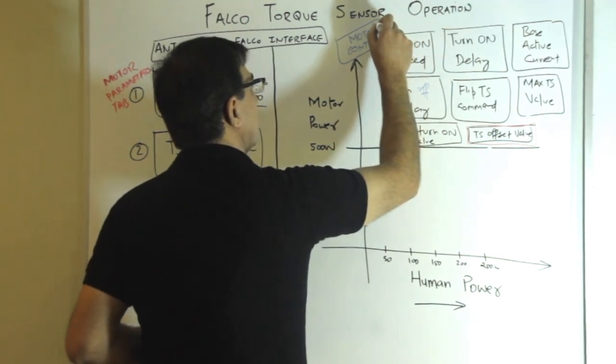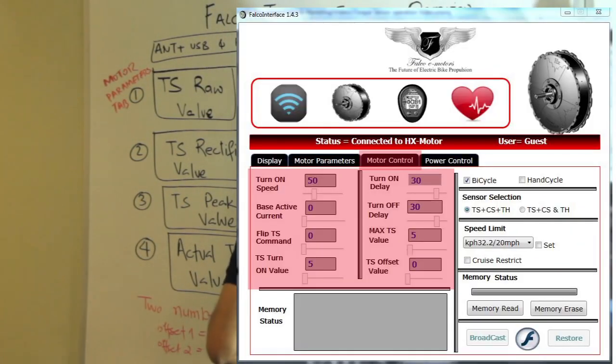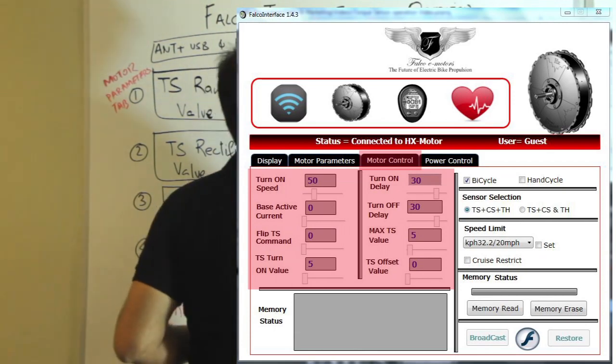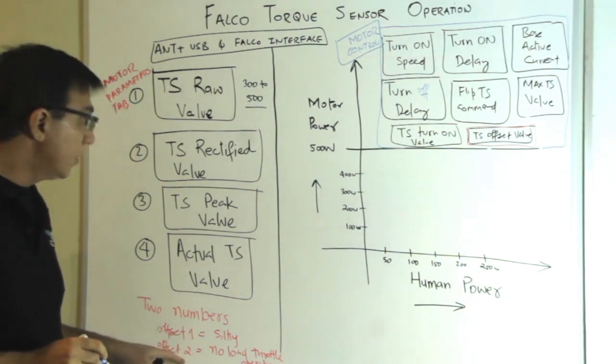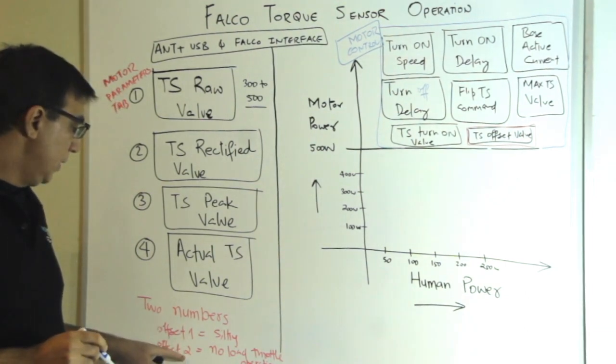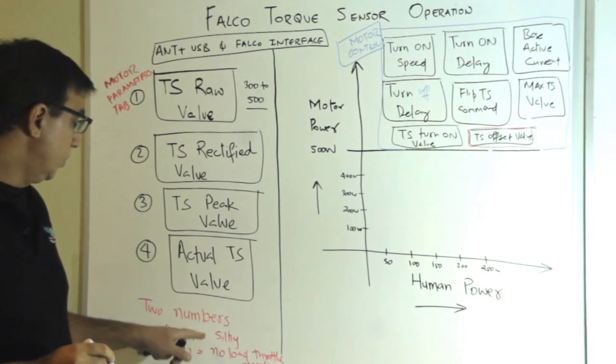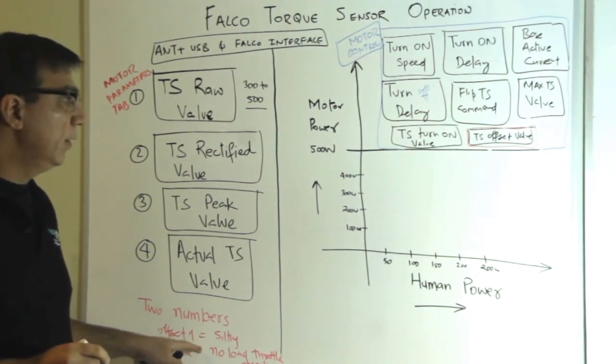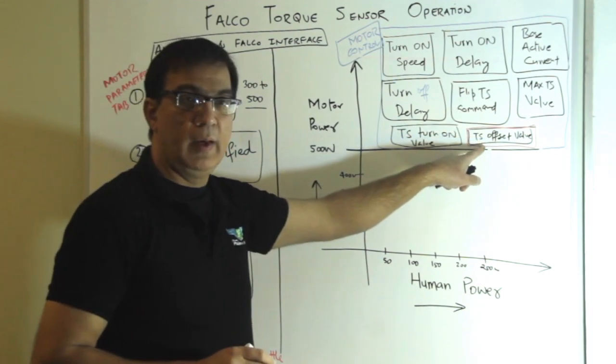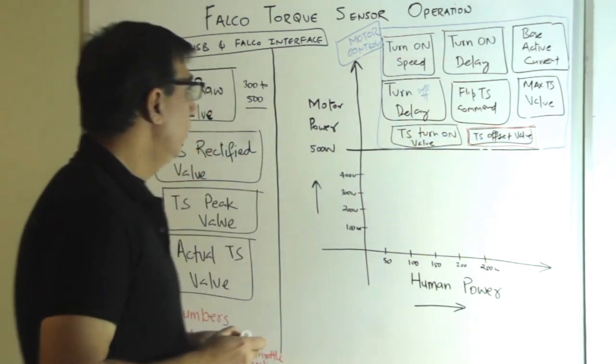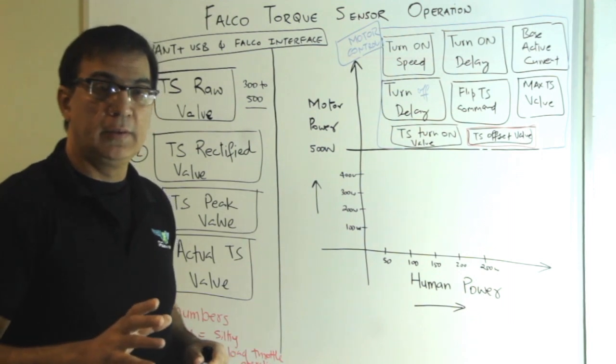This is under motor parameters tab, parameters under motor control tab. So once we have found out offset one and offset two, essentially these two offsets are added together and then we put that under motor control tab in TS offset value. So that essentially completes the calibration of the torque sensor.